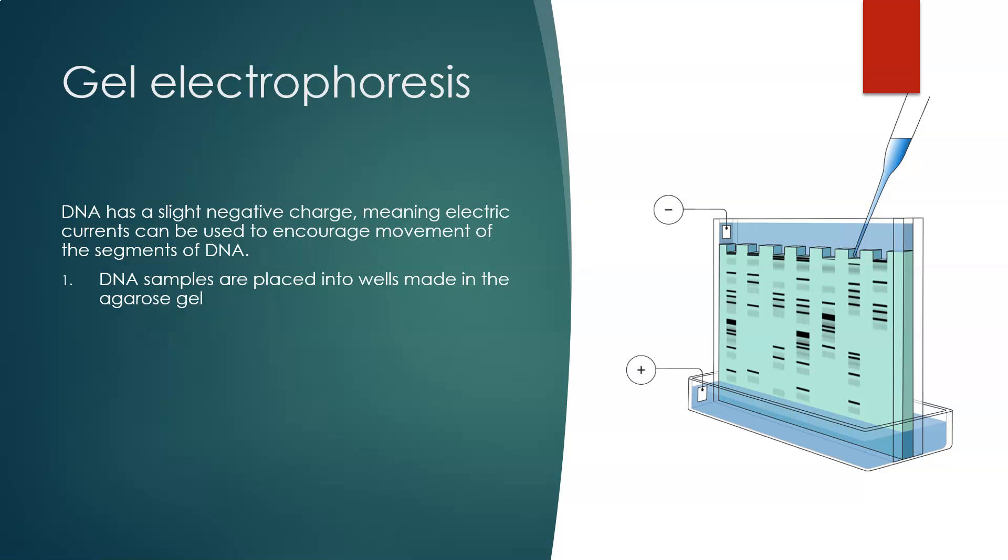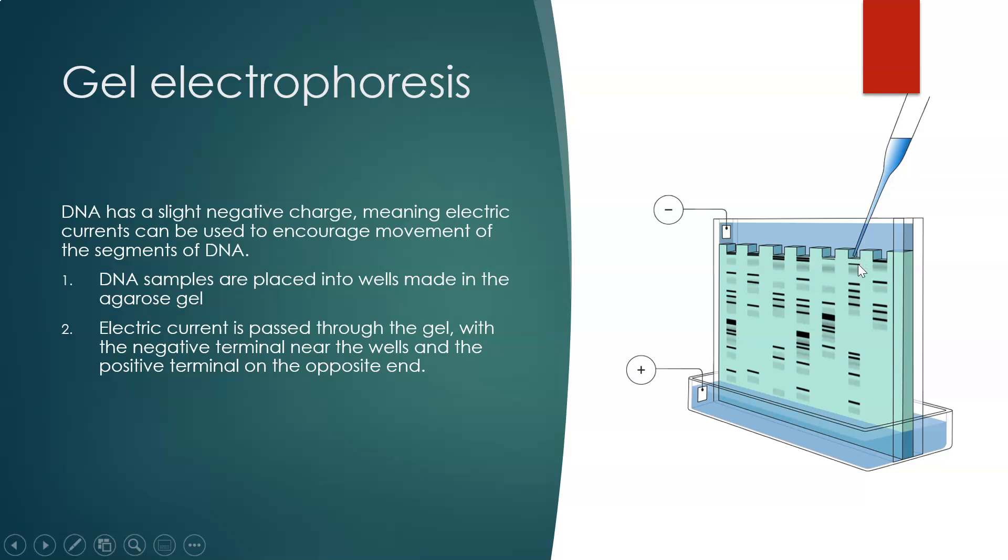How we do this: DNA samples are placed into wells made in the agarose gel. The electric current is then passed through the gel with a negative terminal near the wells and the positive terminal at the opposite end. You've got your positive terminal down there, you've got your negative terminal up there, and that passes the current through the wells where the DNA samples are placed.